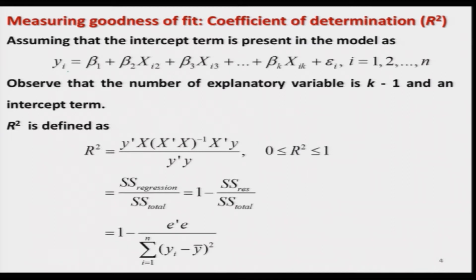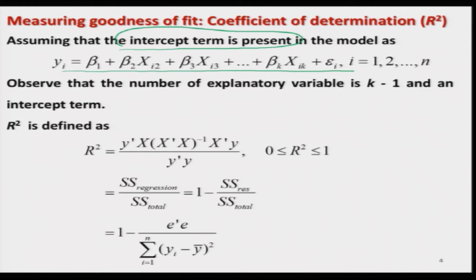We consider a model: yᵢ = β₁ + β₂xᵢ₂ + β₃xᵢ₃ + … + βₖxᵢₖ + εᵢ. One very important thing to keep in mind: when we are trying to define the coefficient of determination, the model should have the intercept term. We assume the intercept term is present in the model, and if the intercept term is not present in the model, please do not use R². You always have to consider a model with an intercept term — only then you can use the value of R², otherwise do not use R².